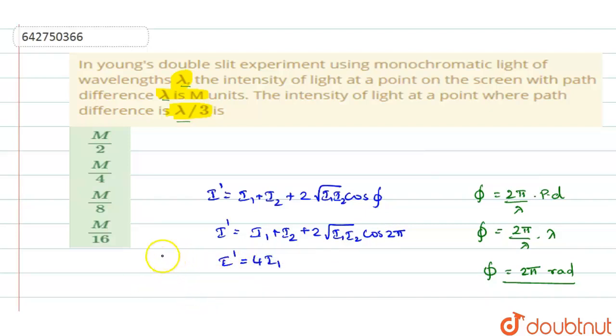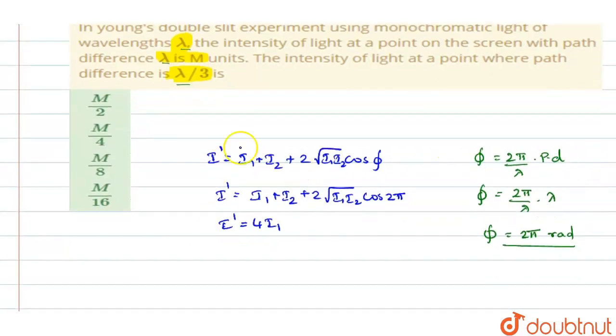Now if I' is 4I₁, but they have given what? The path difference between the intensities is given to be m units, correct? So they have given I' as m. So if I' is m, then I₁ will be equal to m by 4.